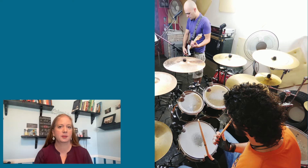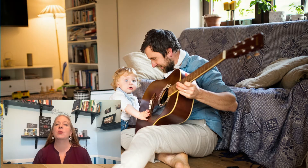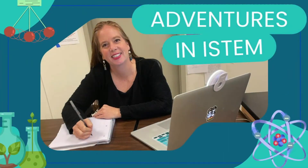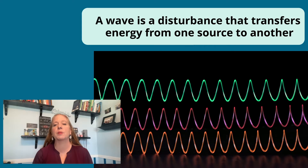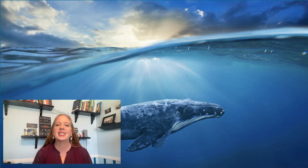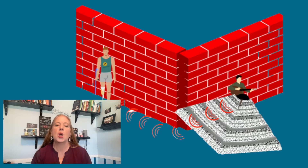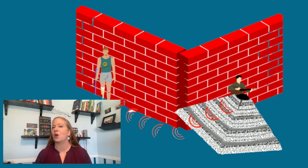Have you ever wondered why sound changes when it moves through different materials or spaces? It all has to do with waves, specifically sound waves. A wave is a disturbance that transfers energy from one source to another. Sound waves are vibrations that travel through a medium such as walls, oceans, and air. When an object vibrates, it creates sound waves that travel outward in all directions.